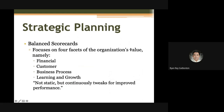The next strategic planning tool is what you call your balanced scorecard. In a balanced scorecard, it is a type of planning tool where you try to focus your planning process on four facets of your organizational value: namely, your financial aspect, your customer aspect, your business process, and learning and growth. The financial aspect covers the budget, resources, and the likes of the organization.